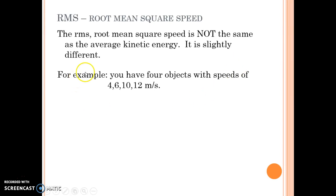So let's say that we have four objects. They're moving at 4, 6, 10, and 12 miles per hour, respectively. To do the average, what am I going to do? I'm going to add them all up, divide by 4, and I get an average speed of 8 meters per second.